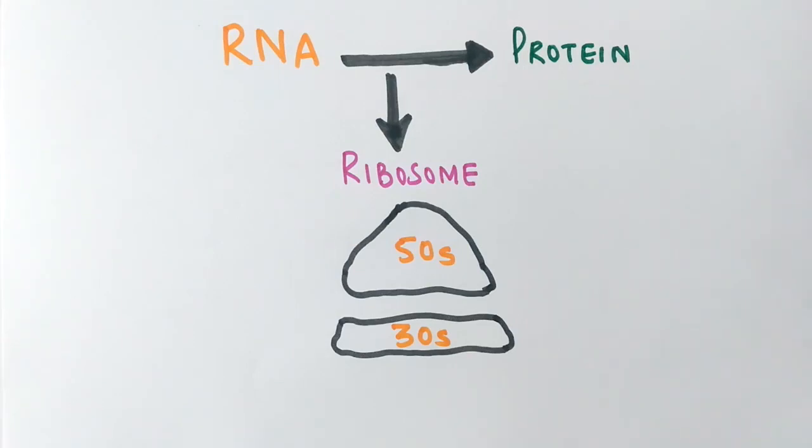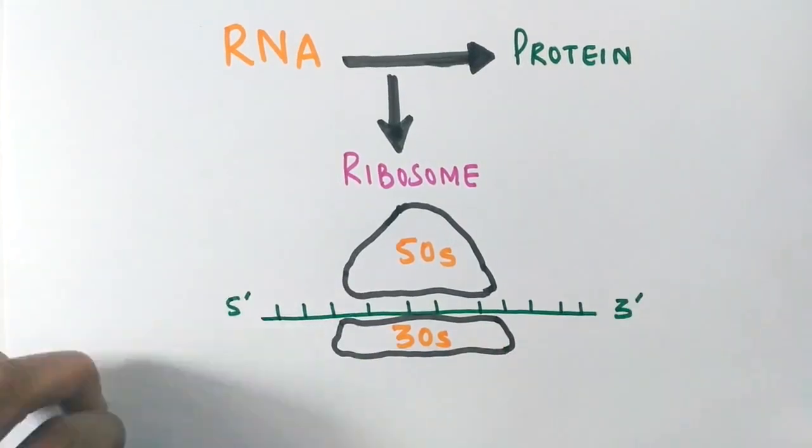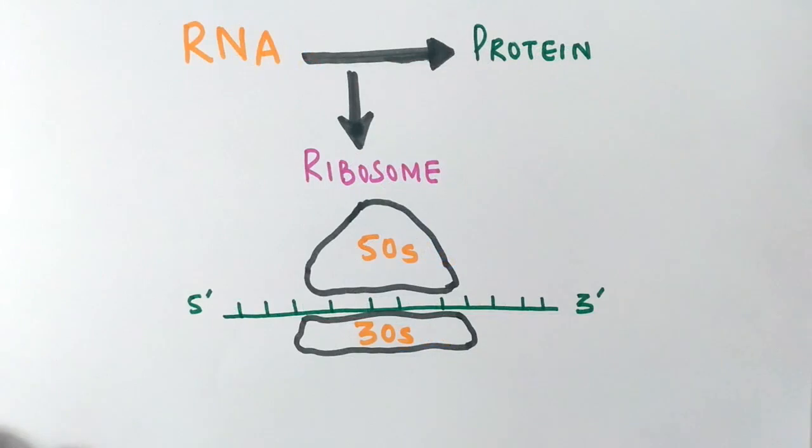During protein synthesis, the translation, the mRNA chain embeds itself in the ribosome between two subunits as shown in the figure. Then the charged tRNA starts to make the polypeptide chains by incorporating amino acids by taking the codon information from the mRNA chain. So this is how the translation process kicks in.